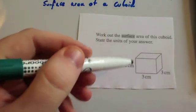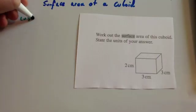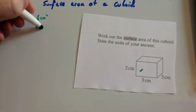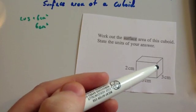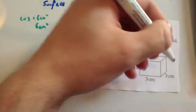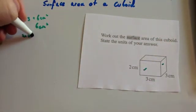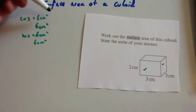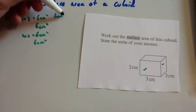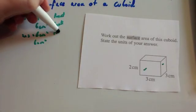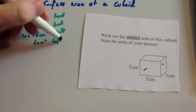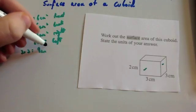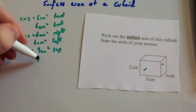The area of the front is two by three, so two times three equals six centimetres squared. The back is exactly the same, so that's six centimetres squared as well. The right hand side is three centimetres by two centimetres, so that's again two times three, giving six centimetres squared, and the left hand side is exactly the same. It's worthwhile writing down what you're working out — front, back, right hand side, left hand side. Then the top is three by three, so three times three equals nine centimetres squared, and another nine centimetres squared for the bottom.